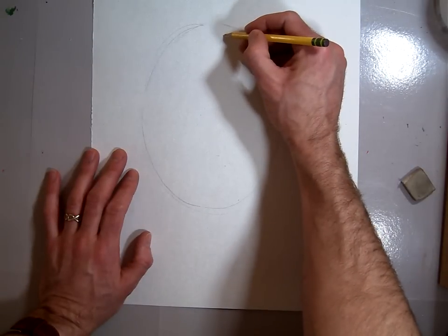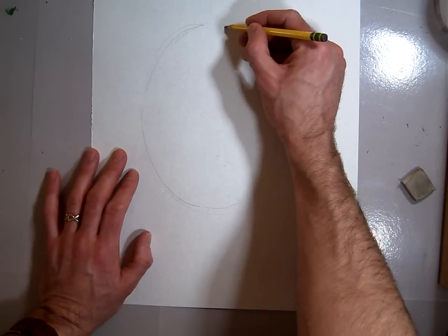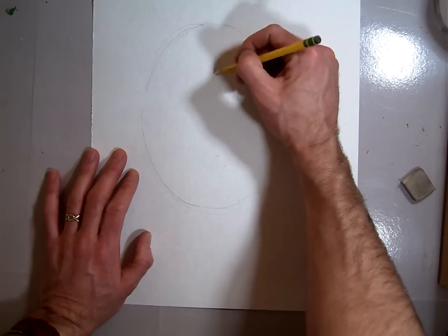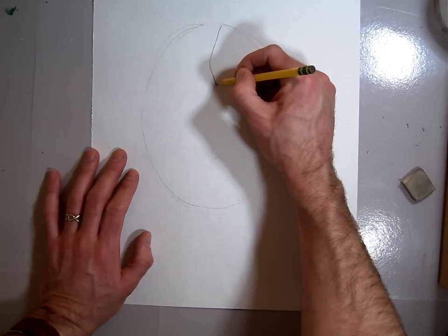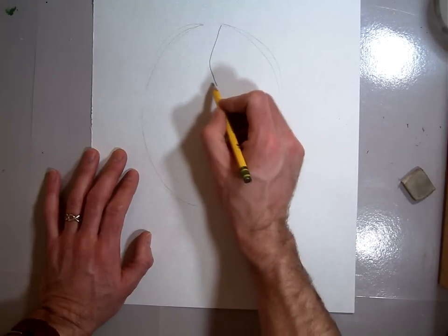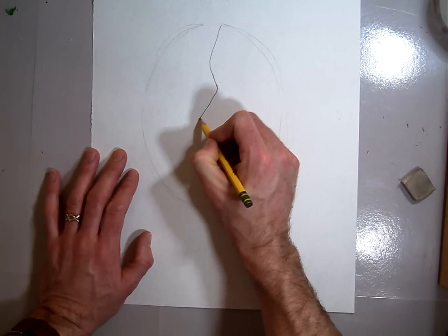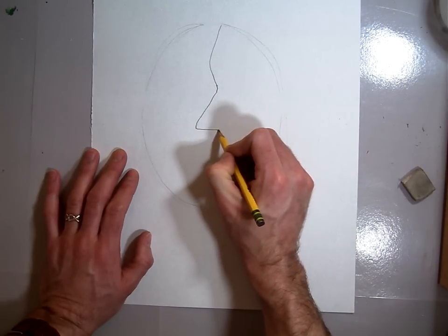He would often look from the profile or side perspective and create the forehead, and right around where he wanted the eyes, he would create an indentation and then go out for the nose and around.